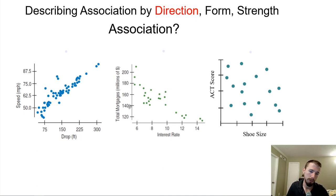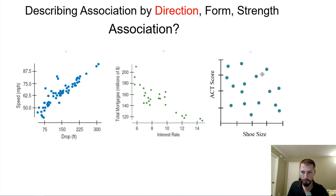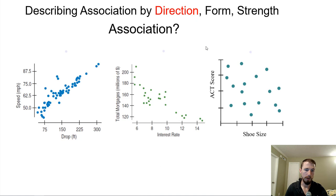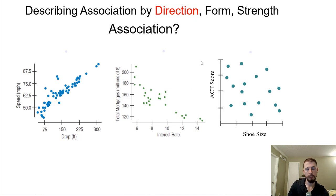Other examples include interest rates and the total mortgages sold — as interest rates go up, fewer people buy houses. And shoe size and ACT scores, which is just kind of all over the place. We have two quantitative variables and we want to look at the association between them. Is there a positive association, a negative association, or really no direction going on? That'll be the first way we can describe the association.